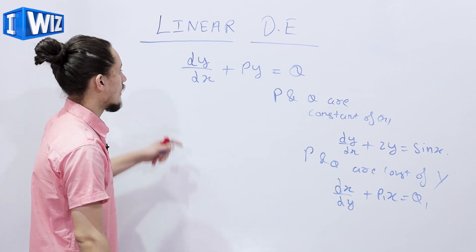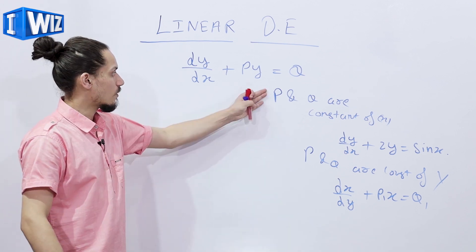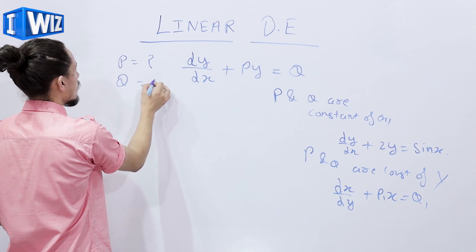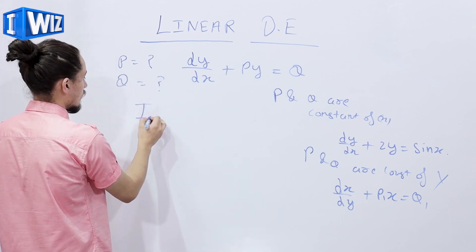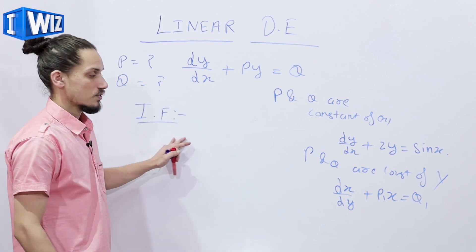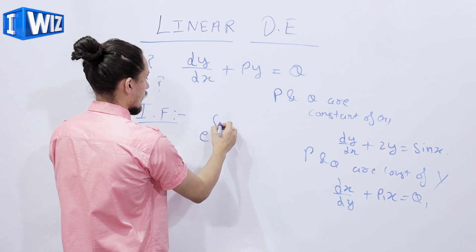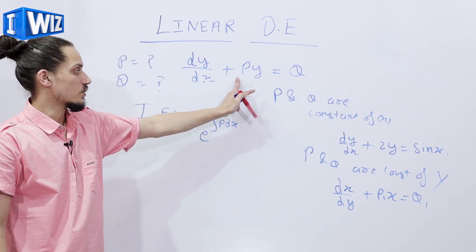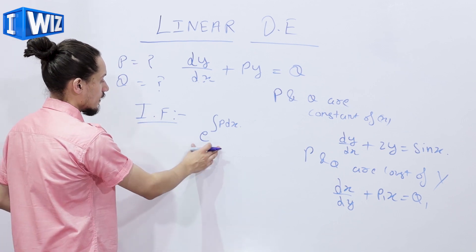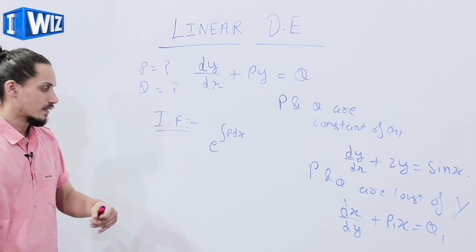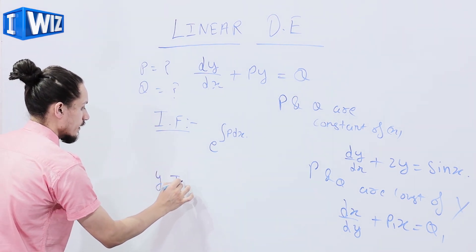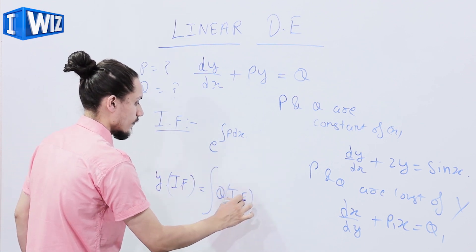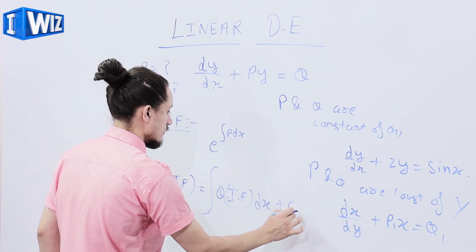There are 3 easy steps to solve it. First step: reduce the given equation into the form dy/dx + py = q, from which you get the value of p and q. Second step: find the integrating factor, IF = e^(∫p dx). Third step: find the general solution, which is y·(IF) = integral of q·(IF) dx + c.